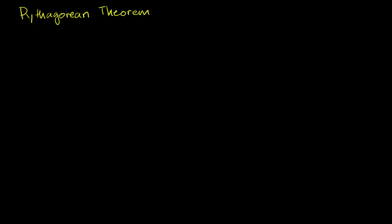It deals with right triangles. A right triangle is a triangle that has a 90-degree angle in it. The way I drew it, this is our 90-degree angle. If you've never seen a 90-degree angle before, think of it this way: if one side goes straight left to right and the other side goes straight up and down, those sides are perpendicular. The angle between them is 90 degrees — it is a right angle.